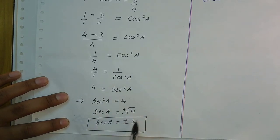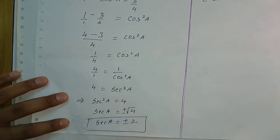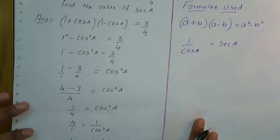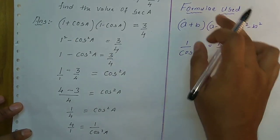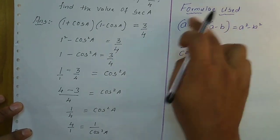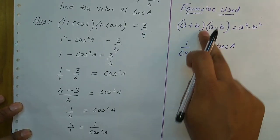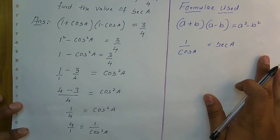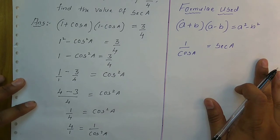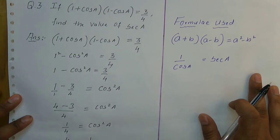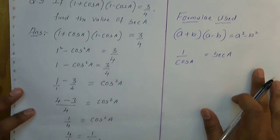√4 = 2, so sec a = ±2. These are the formulas used in this problem. This is the answer.